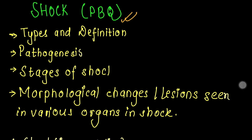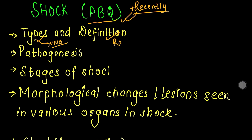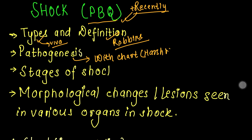Next topic — we have to learn the types and the definitions. You have to learn the definition from Robbins. Then we have to learn the pathogenesis. Robbins book is an important reference. We will include shock, and the steps we have to learn are the stages of shock.